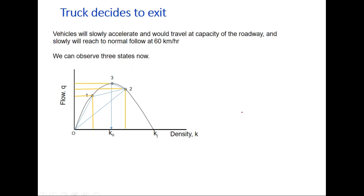Now assume the truck decides to exit after some time — at the next intersection it takes a turn and leaves the highway. After the truck exits, vehicles will slowly accelerate and travel at the capacity of the roadway section, gradually reaching normal flow. We can now observe three states: state 1 before entry of the truck, state 2 after entry of the truck, and state 3 after exit of the truck.